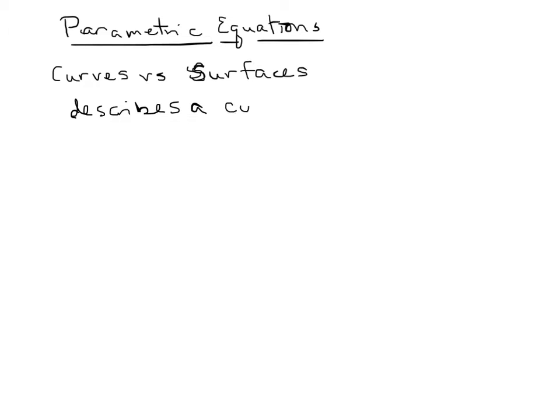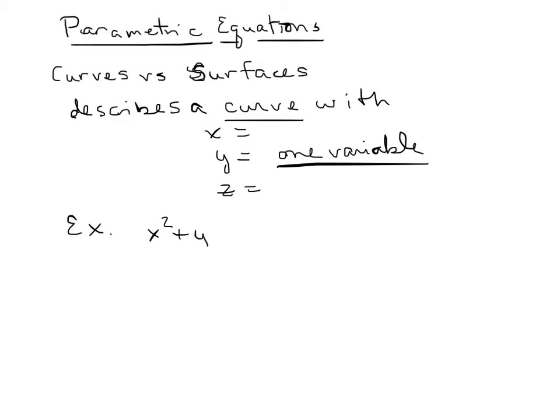So it describes a curve with some sort of an x equals, a y equals, if that curve is in three-dimensional space, it's got a z equals, and if it's a curve, it has one variable. All right, so here's an example. So we could just take the circle, x squared plus y squared equals four. Really simple circle. We know this looks like just a circle, right? Here's our graph. It's just a circle with a radius of two.